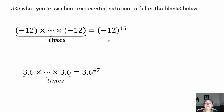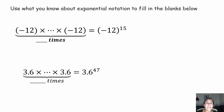Use what you know about exponential notation to fill in the blanks below. Pause the video, try to fill in the blanks, and come on back. Negative 12 to the fifteenth power means we're going to multiply negative 12 by itself 15 times. 3.6 to the forty-seventh power means we're going to multiply 3.6 by itself 47 times. That's all that means.